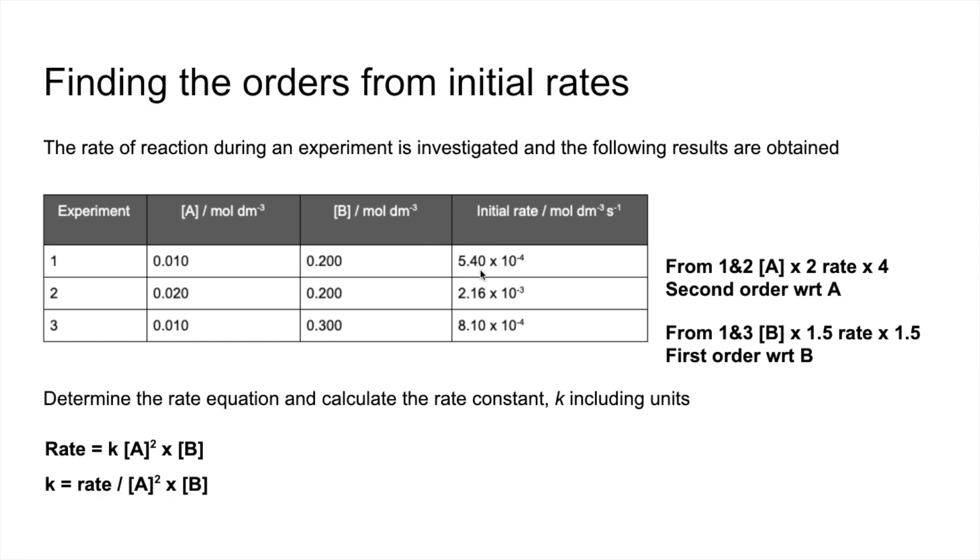And then I'm just going to sub in the values from experiment 1. You should get the same answer irrespective of which row you use. And often in exam questions, they'll tell you which row you use anyway. So putting those numbers in, I get a value of K at 27.